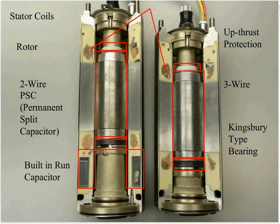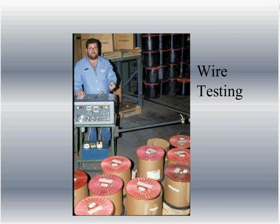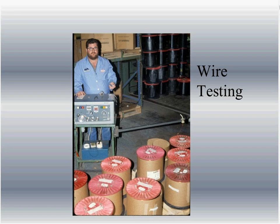This picture is of Danny Fryer — he still works for us. What Danny is doing is pulling wire off a spool and running it through his machine. The machine is calibrating to make sure that the varnish on the copper wire is evenly distributed with no bare spots. He's not going to run the whole spool — he'll run about 100 feet, and then make the assumption that if the first 100 feet is good, the rest is going to be good.